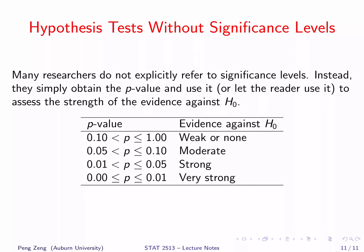Many researchers do not explicitly refer to a significance level. Instead, they simply obtain the p-value and use it, or let the reader use it to assess the strength of evidence against H0. The following table lists the strength of evidence for different p-values: when the p-value is larger than 0.1, there is weak or no evidence against H0; between 0.05 and 0.1, there is moderate evidence; between 0.01 and 0.05, there is strong evidence; and when the p-value is smaller than 0.01, there is very strong evidence against H0.